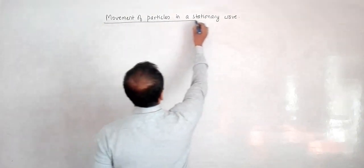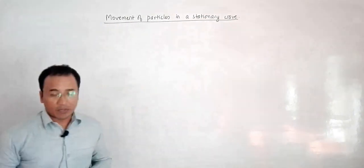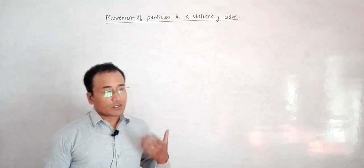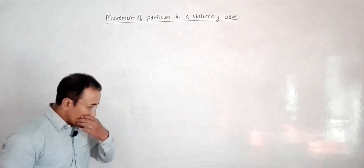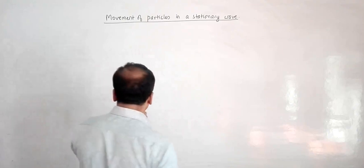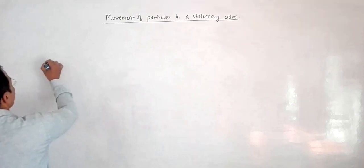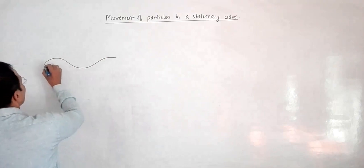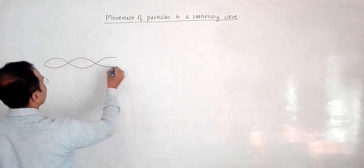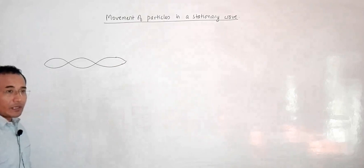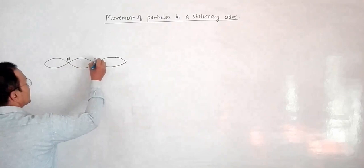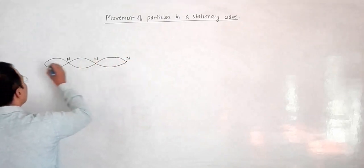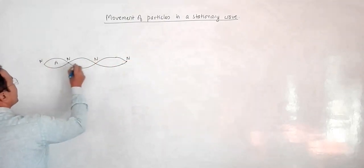A stationary wave is generally understood when you look at animations. When I draw a certain wave, it is slightly difficult to understand, but let us try. A stationary wave would look like this. You can see this — somewhat like this. And you know these points as nodes: this is a node, this is also a node, this also a node. This region is an antinode, antinode, and antinode.